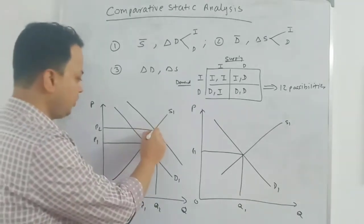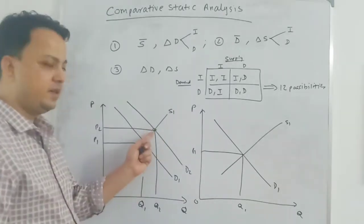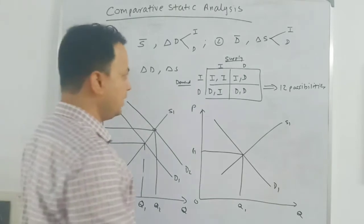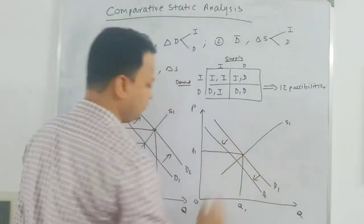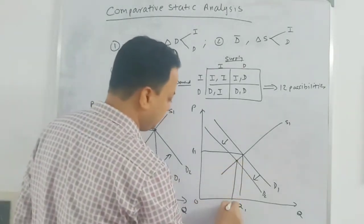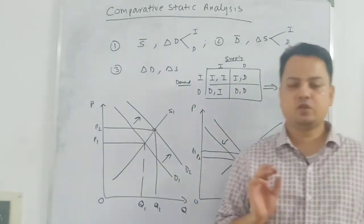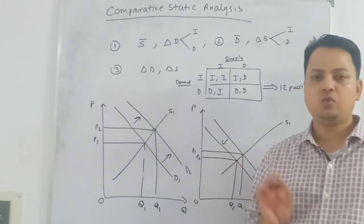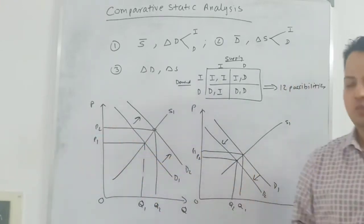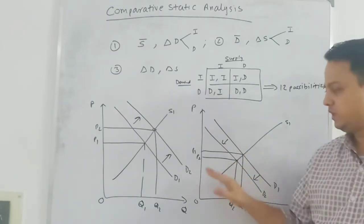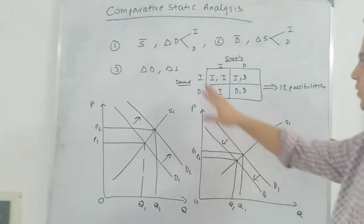In comparative static analysis we only compare the old equilibrium with the new equilibrium and look at what changes take place. In the case of an increase in demand, we see an increase in both quantity and price at the new equilibrium. In the case of a decrease in demand, we see a decrease in both price and quantity at the new equilibrium. These are the two possibilities we have looked at for Case 1.